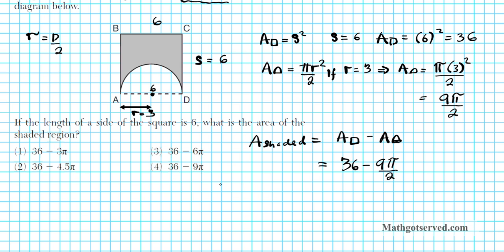There goes the final answer. In decimal form, 9 divided by 2 is 4.5, so it's 36 minus 4.5 pi. Our answer is option number 2.